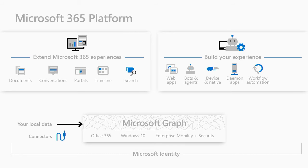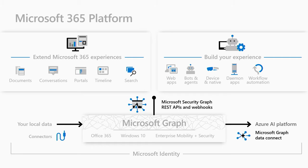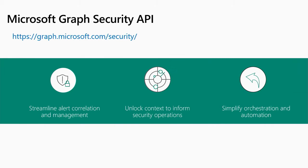This is where the Microsoft 365 platform powered by Microsoft Graph comes to the rescue. In particular, we'll look at two areas: Microsoft Graph Data Connect, which enables you to get your data from M365 using Graph and connect it with Azure; and the Microsoft Graph Security API, a REST API that enables you to connect different security products via a single unified interface.